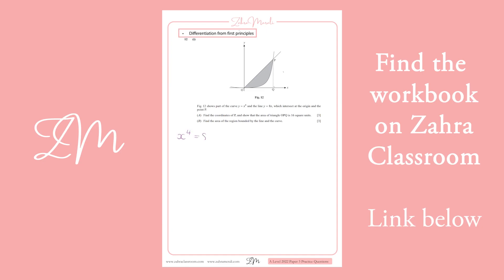So, x to the 4 equals 8x. Move everything to the same side. We're going to take x outside the bracket, and we get x cubed minus 8. So, x equals 0, which we can already see, and x cubed equals 8.